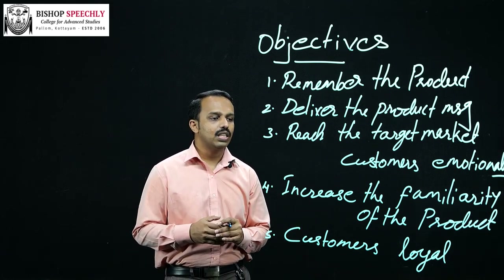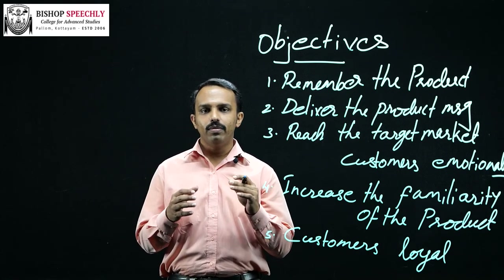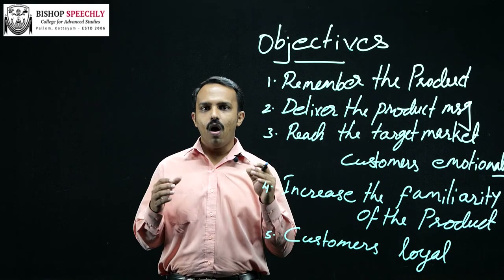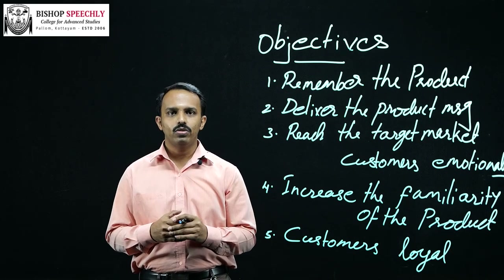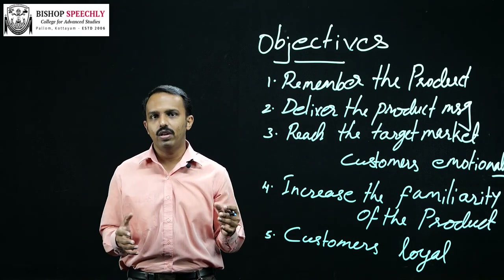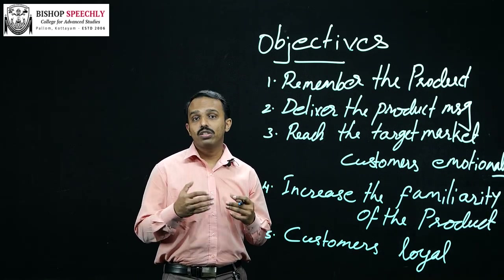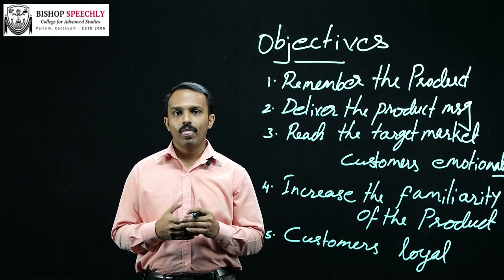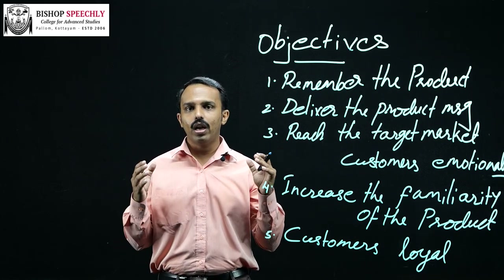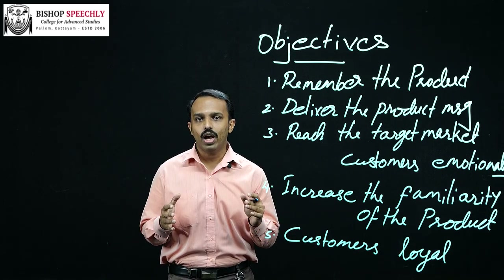The third objective is to reach the target market customers emotionally. The fourth one is to increase the familiarity of the product. Through branding activity, the firm makes a product familiar in the market. We are all familiar about top brands' shirts available in the market like Louis Philip, Van Heusen, etc. The last objective is customers' loyalty — branding activity helps the firm to get brand loyal customers, and brand loyal customers are always an asset to the firm.